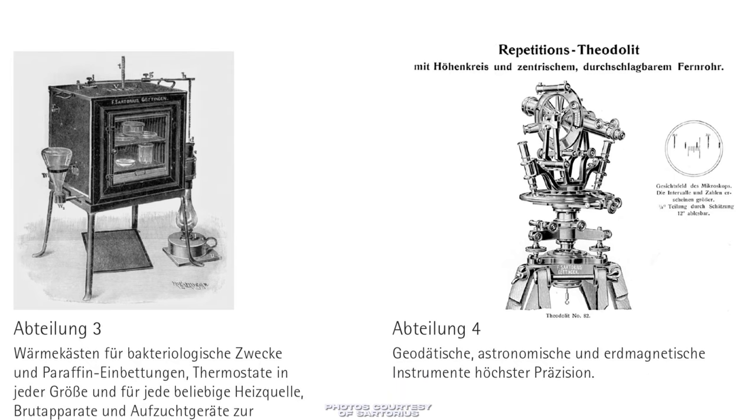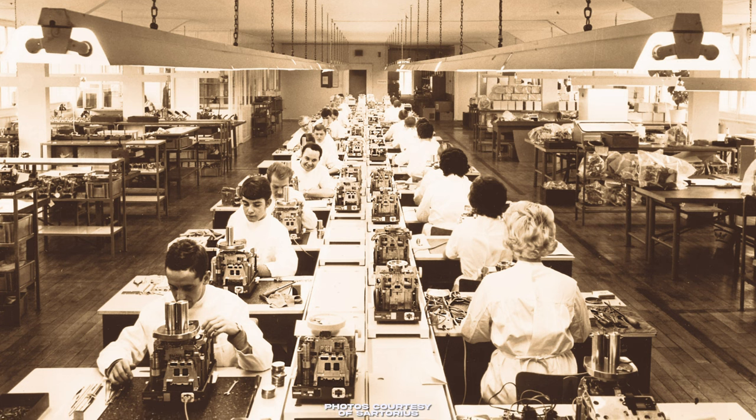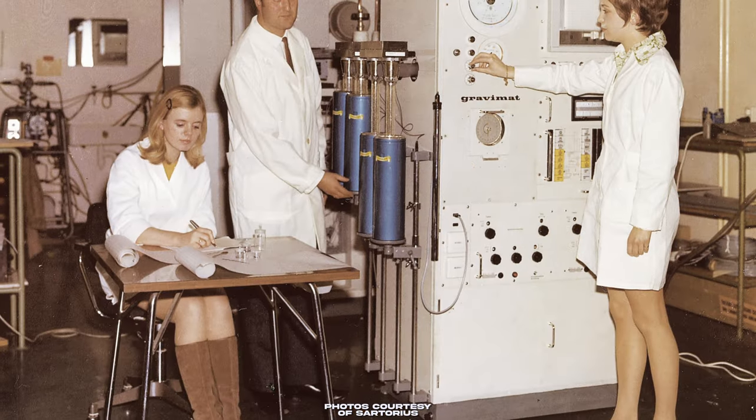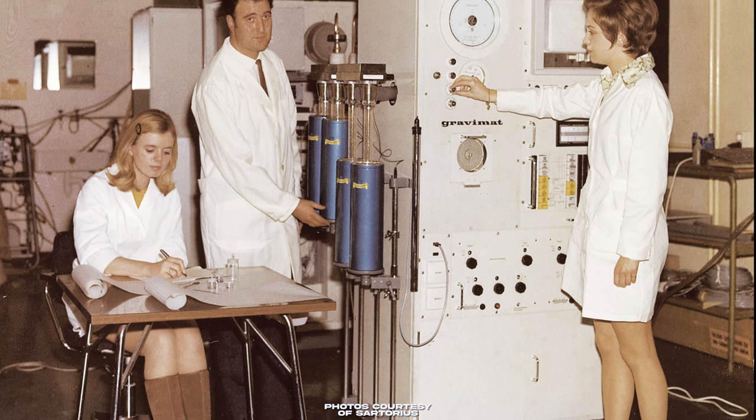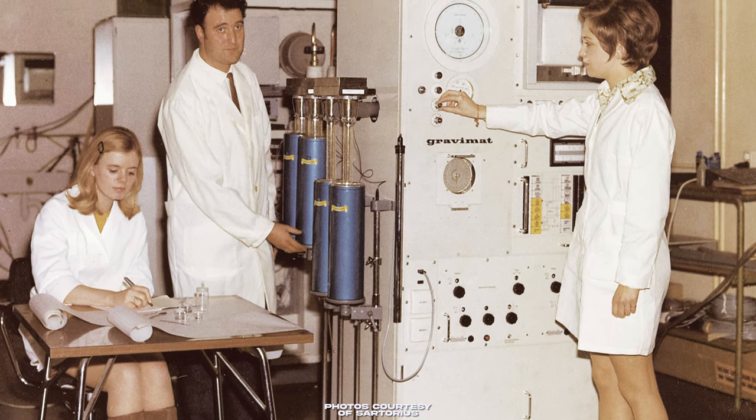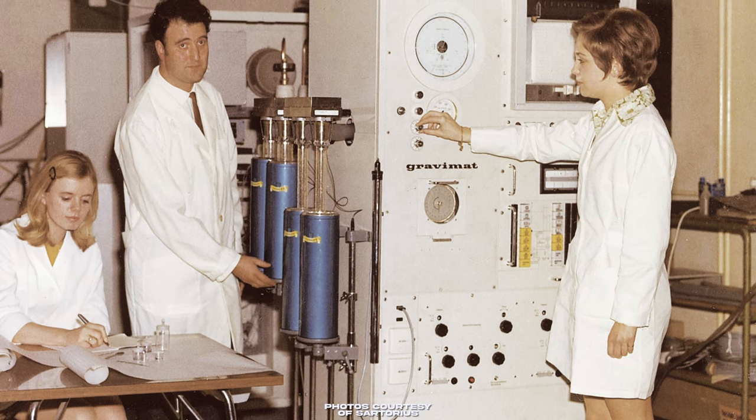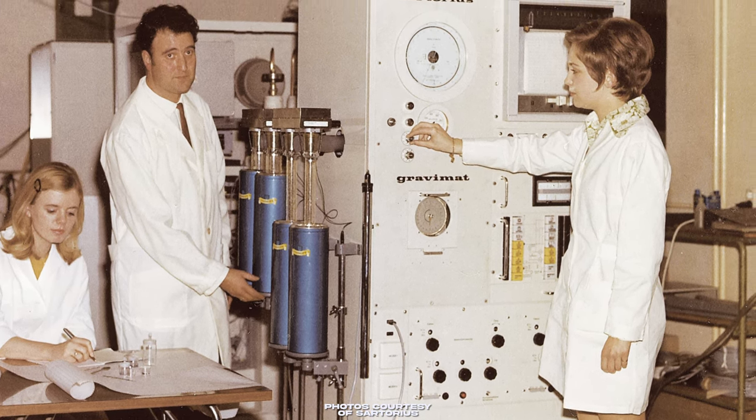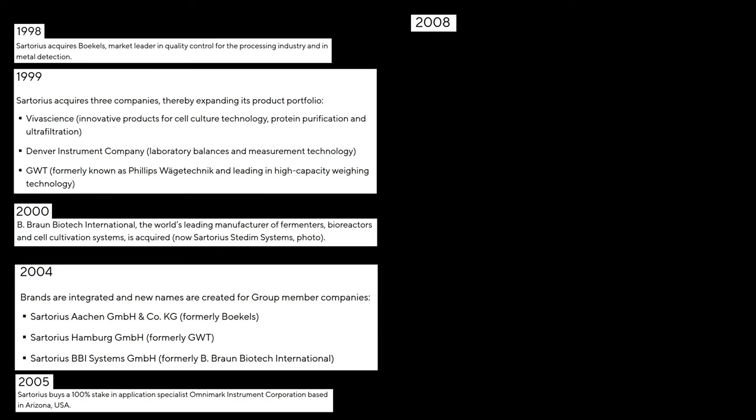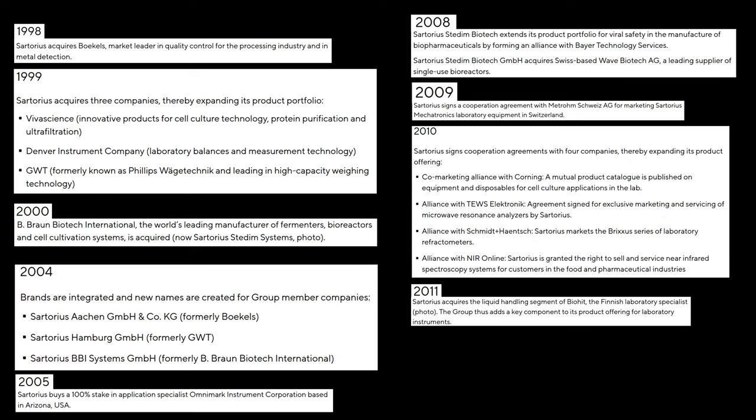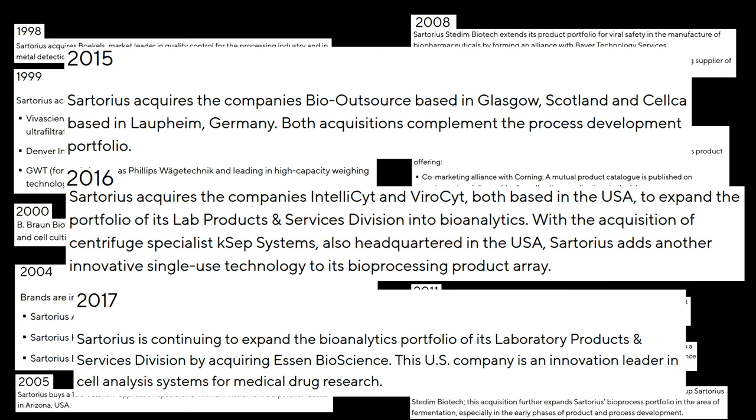They became a public-traded company in 1914, but would then revert to a private company in 1967. A few years later, in 1971, they created the first nanogram balance that set the world record for the most precise weighing instrument, which would then be used to weigh moon rocks that Neil Armstrong brought back from his space expedition. In the late 1990s, they began acquiring more and more companies and expanding their product lineup even further by branching out into new industries like pharmaceuticals and biotechnology.